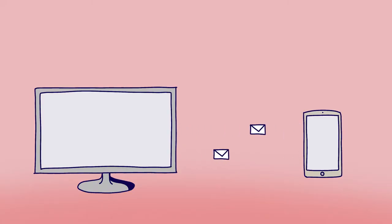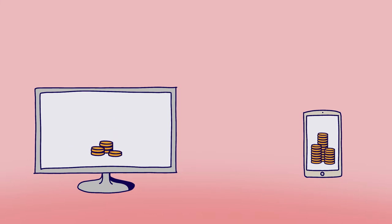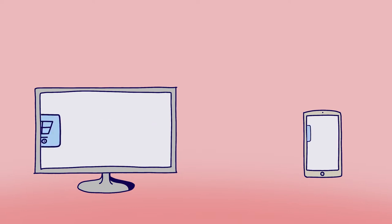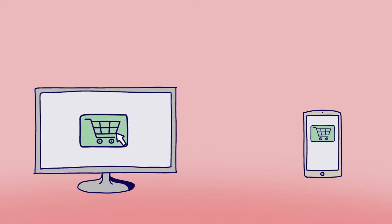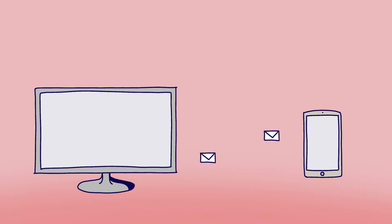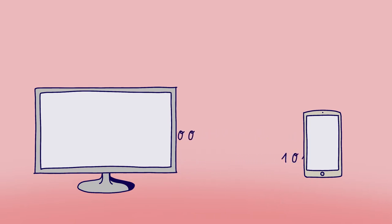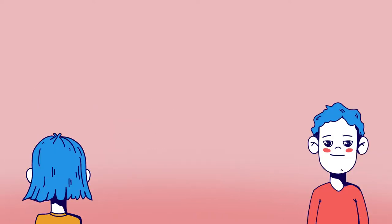Our cell phones and computers are constantly sending and receiving information. For example, when we send a message to our friends, transfer money, do banking online, follow someone on Instagram, or buy something on the internet. To make sure that only the right recipients get this information, the messages are encrypted.